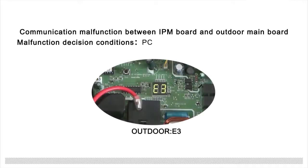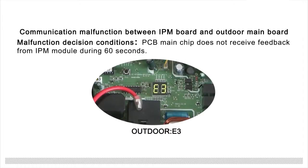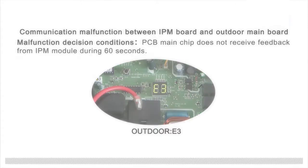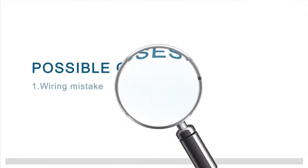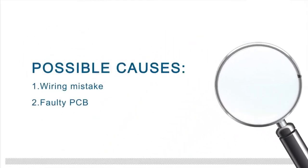Communication malfunction between IPM board and outdoor main board. The malfunction condition occurs when the PCB main chip does not receive feedback from the IPM module during 60 seconds. This failure may be caused by a wiring mistake or a faulty PCB.